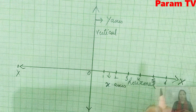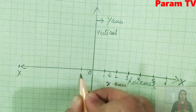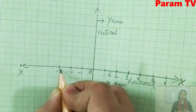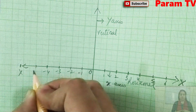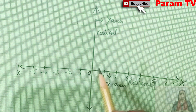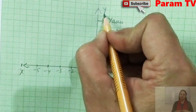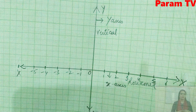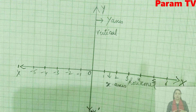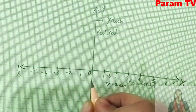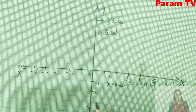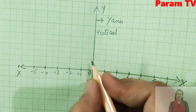Here are the negative numbers: minus 1, minus 2, minus 3, minus 4, minus 5 and so on. On the y-axis, we write y and y-dash. From 0 downward (y-dash) there are negative values: minus 1, minus 2, minus 3 and so on.